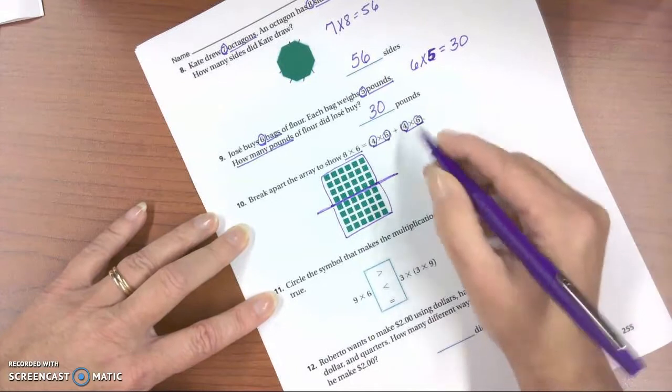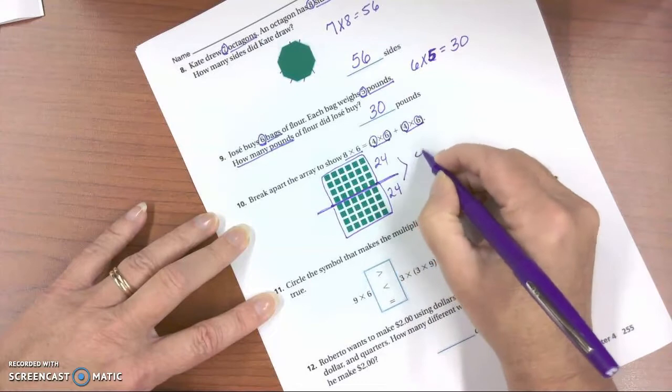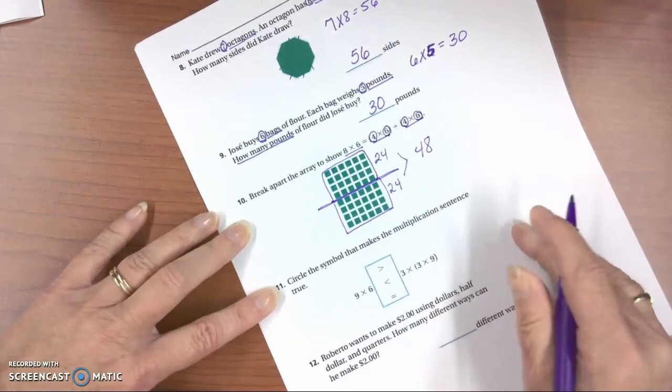And if you want to know the answer, 8 times 6, this gives you 24, and this gives you 24, and that total is 48. So 8 times 6 is 48.